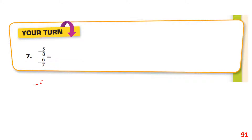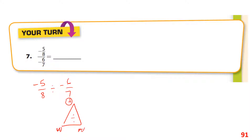Now you try this complex fraction: negative 5 eighths divided by negative 6 sevenths. In the Xero triangle, a negative divided by a negative gives a positive answer. So we write it as 5 eighths times 7 sixths — flipping that second fraction — and multiply across. There's nothing to cross-cancel, so the answer is 35 over 48.